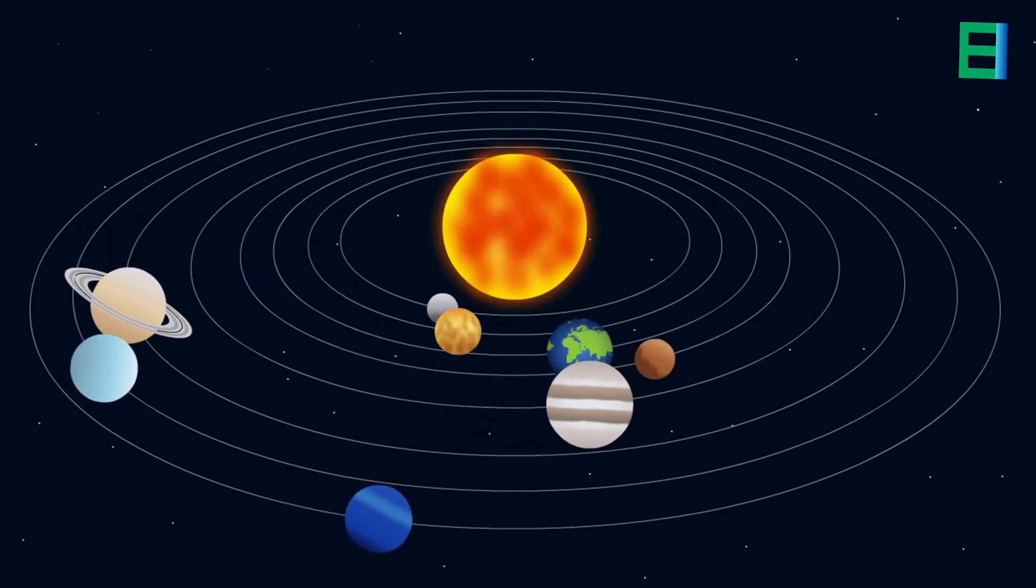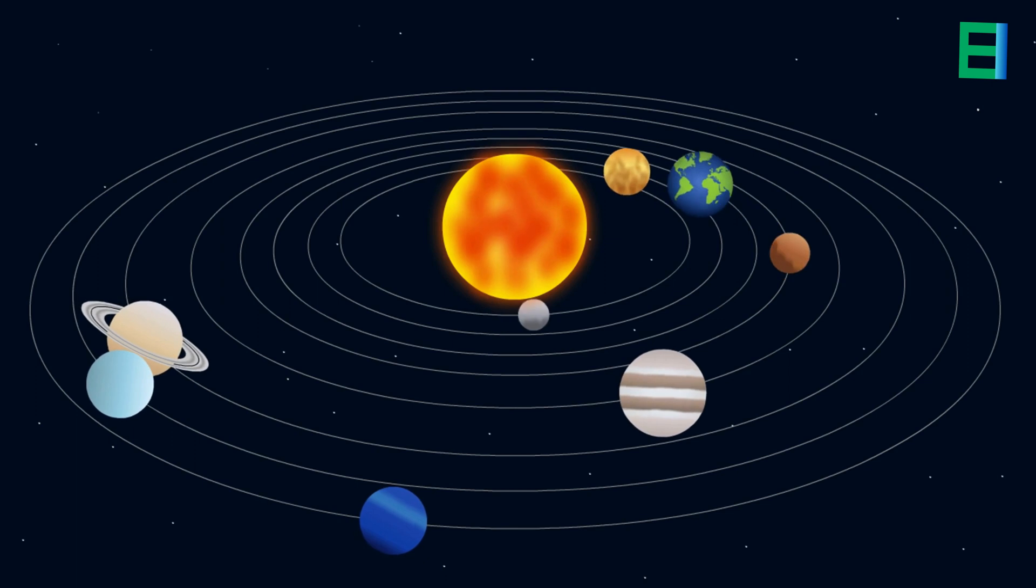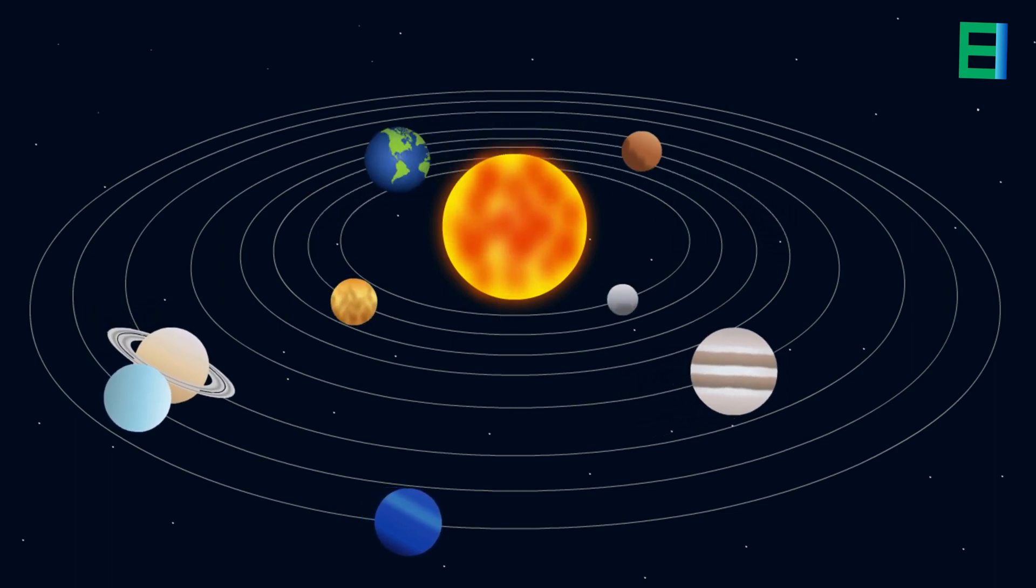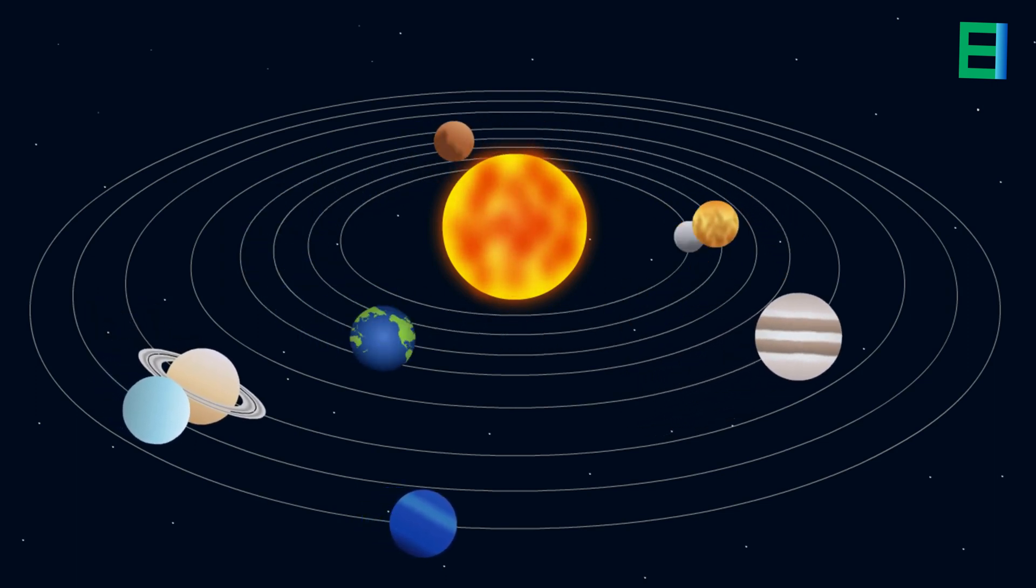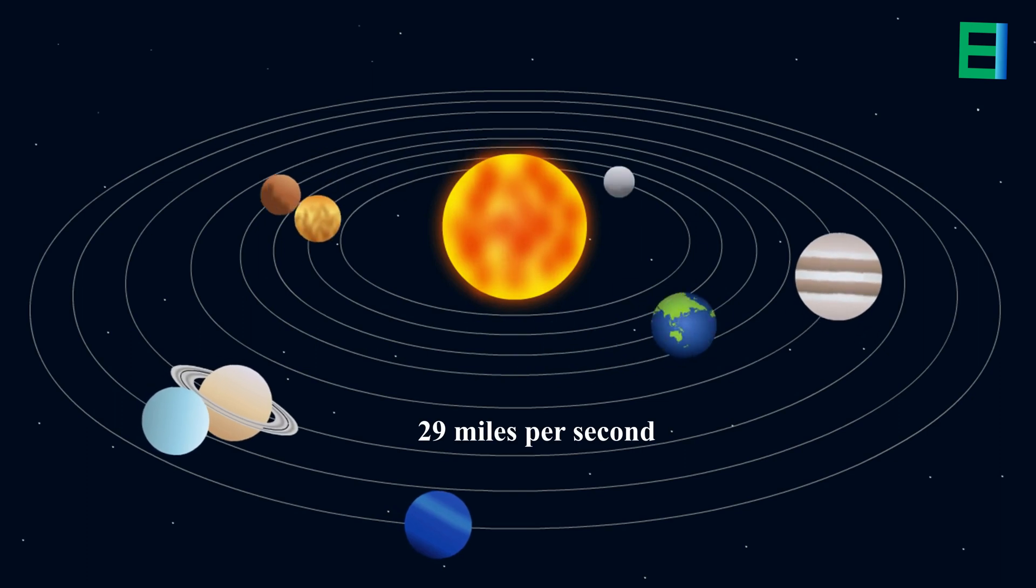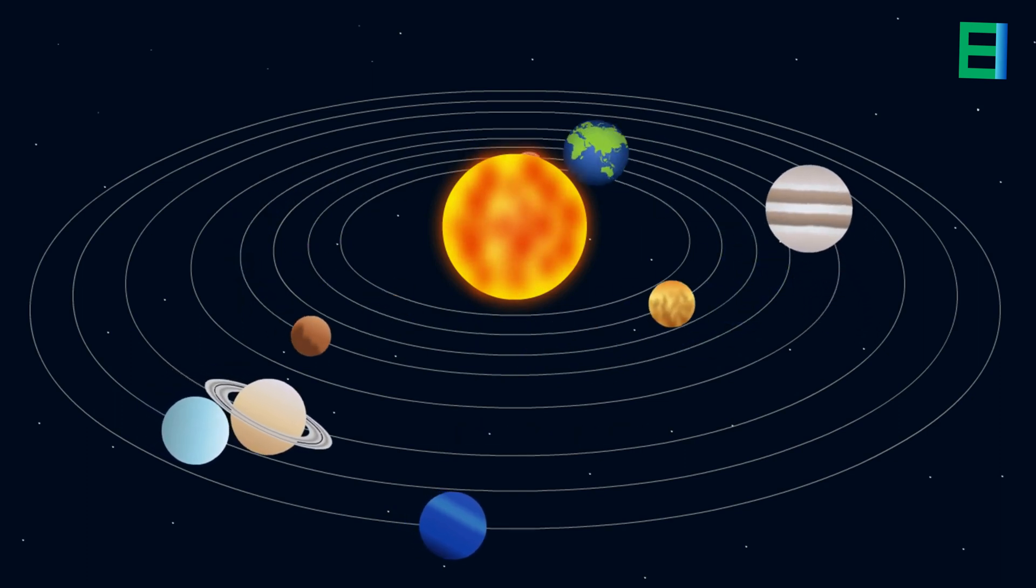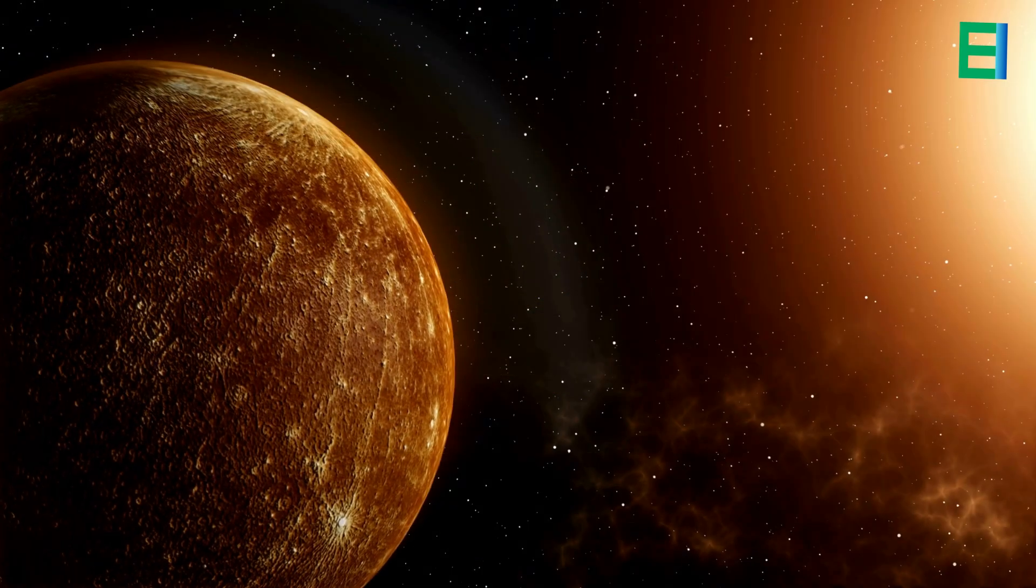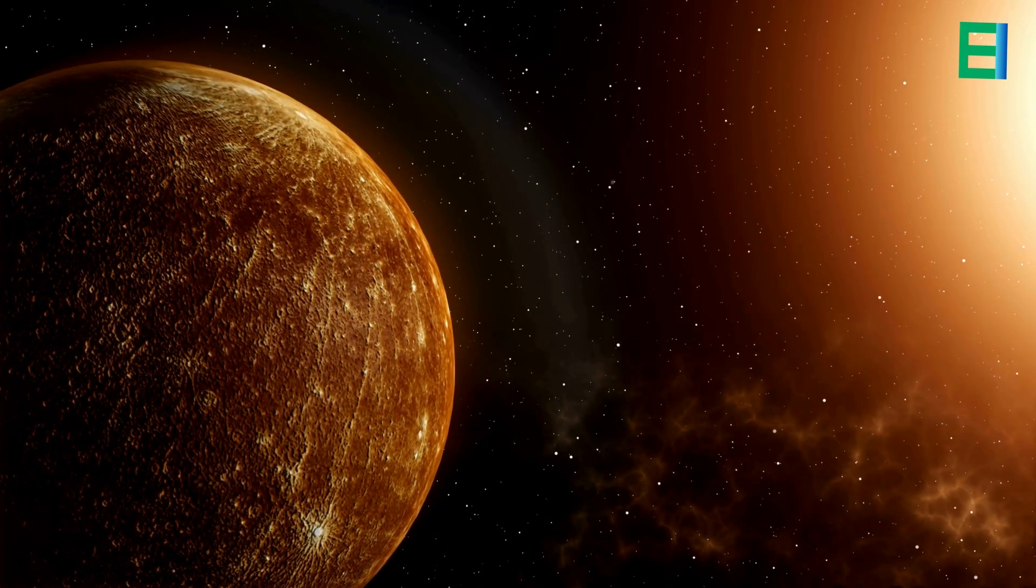Remarkably, Mercury holds the title for the fastest traveler in space, hurtling through its orbit at a velocity of nearly 29 miles per second, surpassing the speed of any other planet.